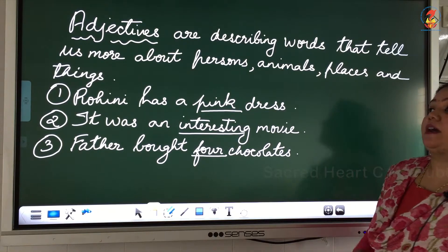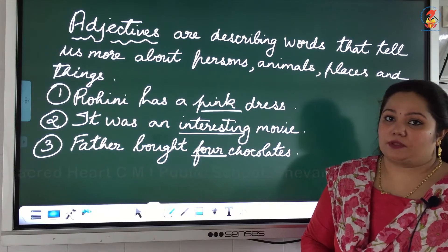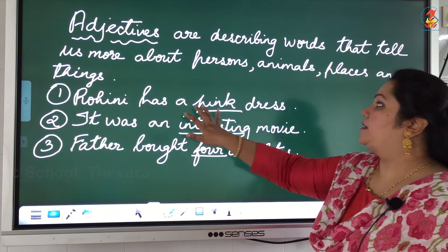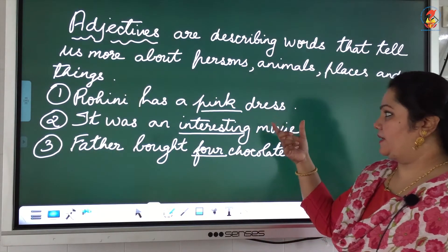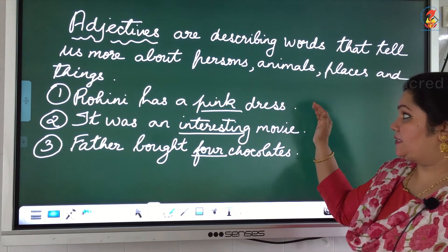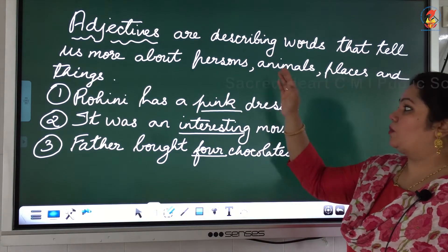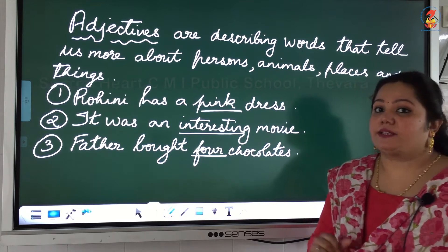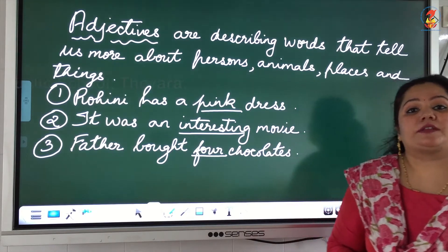Basically, adjectives are describing words and they tell us more about the persons, animals, places and things we are talking about. Let's look at three sentences. The first sentence: Rohini has a pink dress. The word 'dress' is a noun, and the word 'pink' tells you what color the dress is — so 'pink' is the adjective in this sentence because it describes the noun 'dress'.